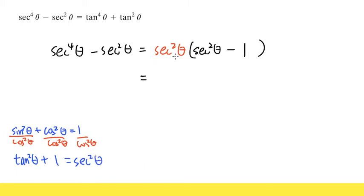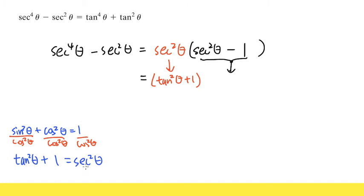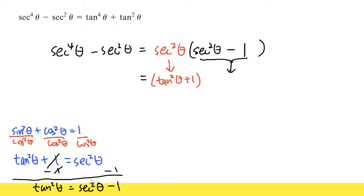Now we can apply these identities. The secant squared theta outside the parentheses can be replaced with tangent squared theta plus one. Inside the parentheses, secant squared theta minus one — looking at the identity, if we subtract one from both sides, tangent squared theta equals secant squared theta minus one. That's exactly what we have inside the parentheses. So we replace secant squared theta minus one with tangent squared theta. Now we've gone from all secants to all tangents.